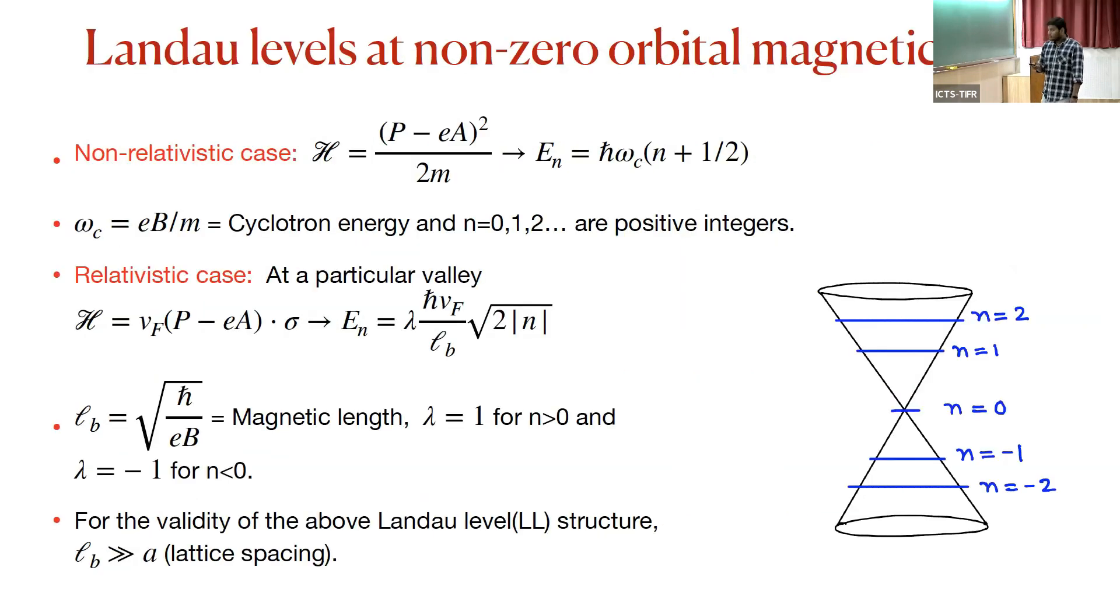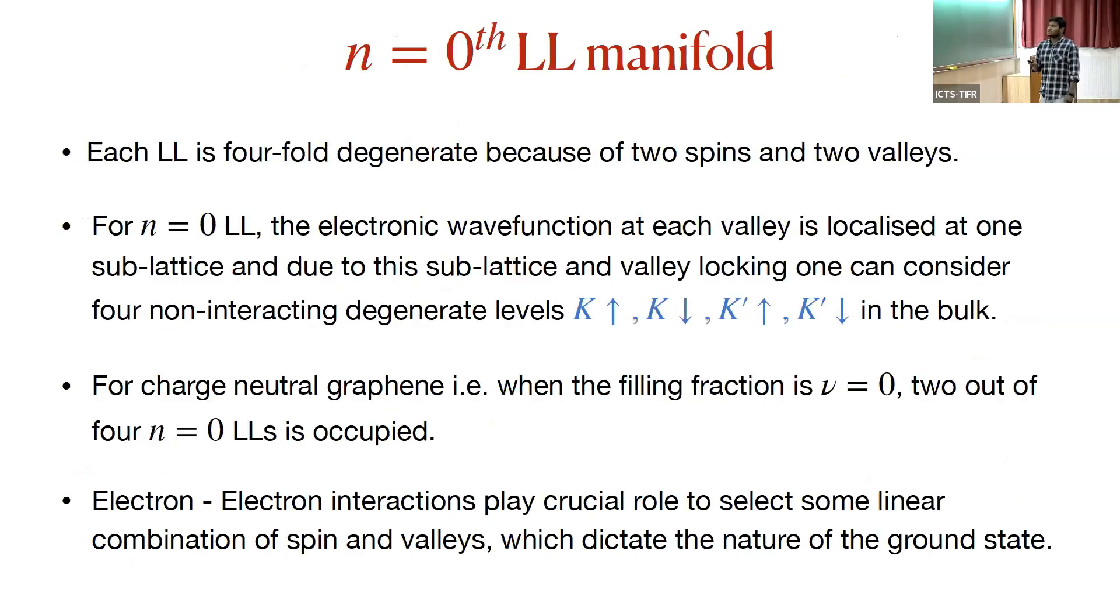For today's talk, I am mostly interested in this n=0 Landau level and its physical consequences. Before going to the n=0 Landau level, each Landau level is fourfold degenerate because there are two flavors of spins and two flavors of valleys involved for creating this Landau level.